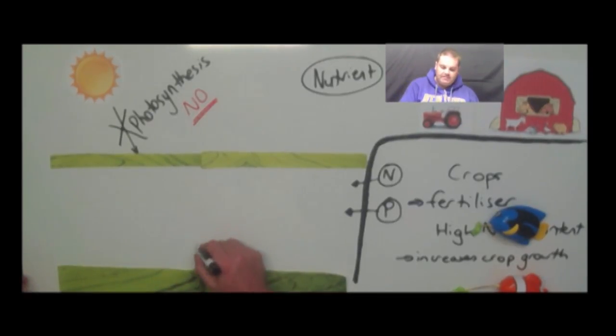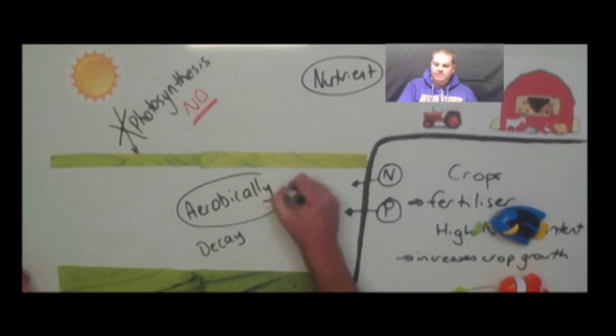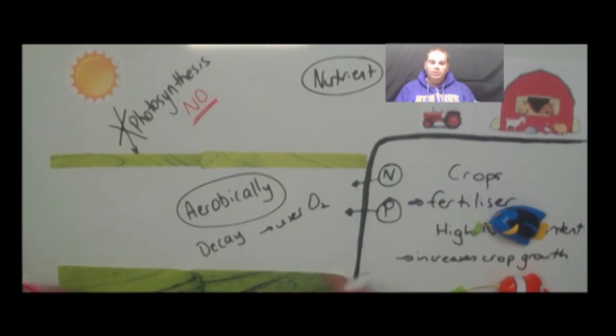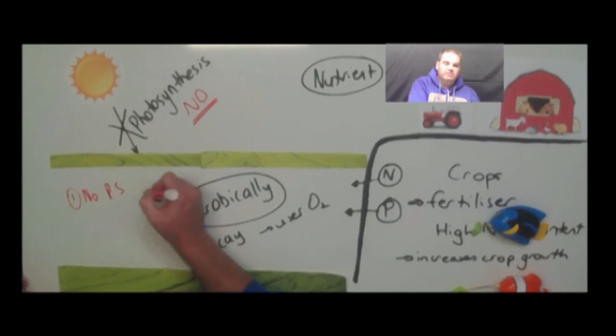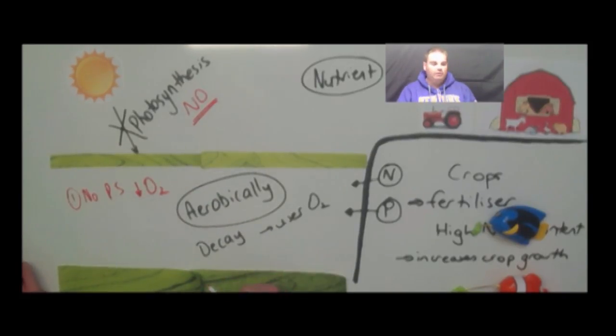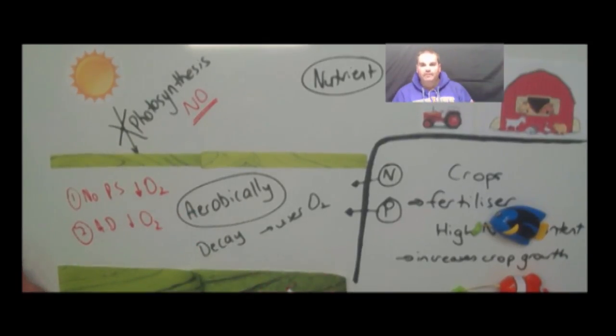Now that bio-organic mass starts to decay. And it decays aerobically. And that's important because aerobic decomposition uses oxygen in the waterways. So what we've got is a double problem here. Number one, we have no photosynthesis. So that reduces our oxygen concentration in the waterway. Number two, we have aerobic decay. So again, that decreases the amount of oxygen in the waterway.